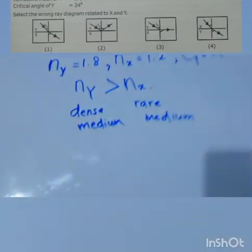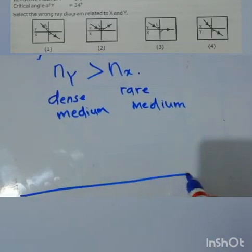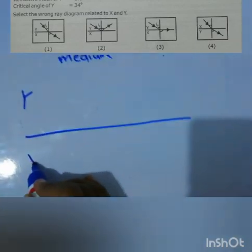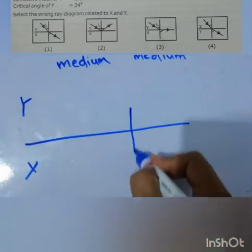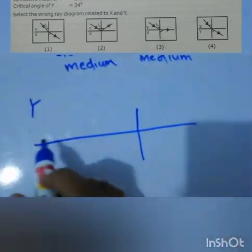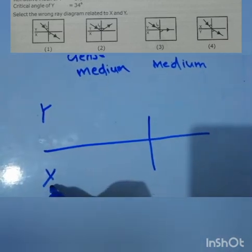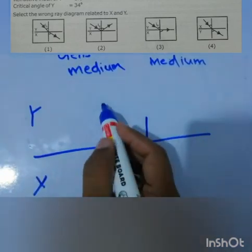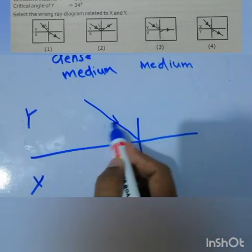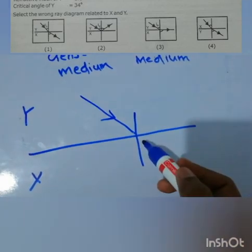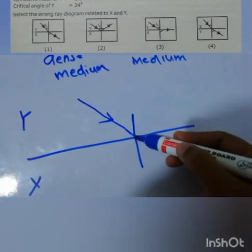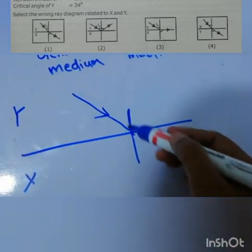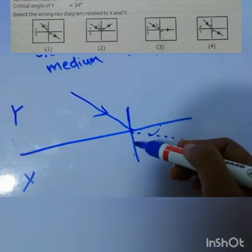In the answers, they have given Y up and X down. In each answer, you have medium Y up and X down. Now a ray is coming from denser medium. So if a ray is coming from a denser medium, it should move away from the normal like this. It's not towards, but away from. This is the normal. They should move away from the normal.